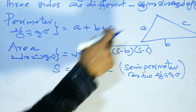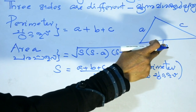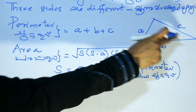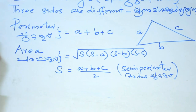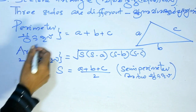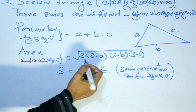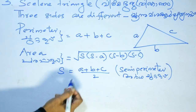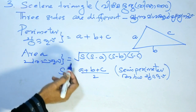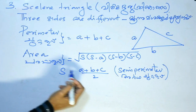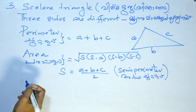S is the semi-perimeter. The area of the Scalene Triangle equals the square root of S into (S minus A) into (S minus B) into (S minus C). Here S equals A plus B plus C divided by 2 — that is the semi-perimeter. Thank you.